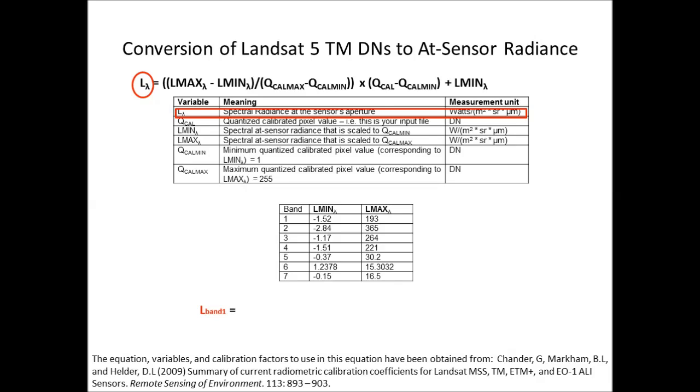This is going to be band-specific, and for this example we'll work on band 1 of Landsat 5. The next variable in the equation is LMax, specific to individual wavelengths. For band 1, it's got a value of 193, and this is specific to Landsat TM data.